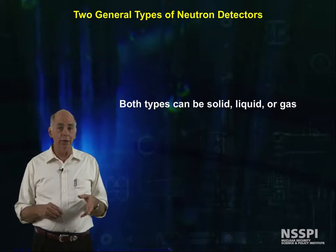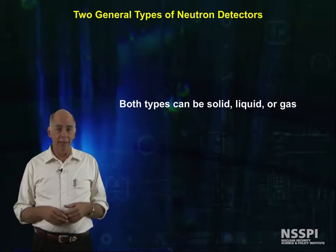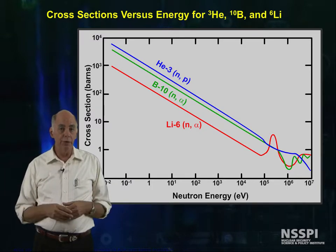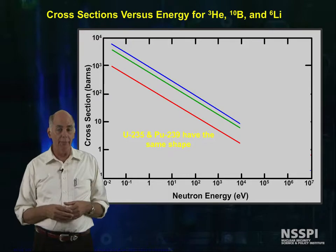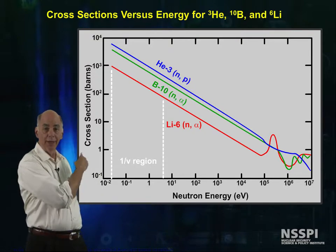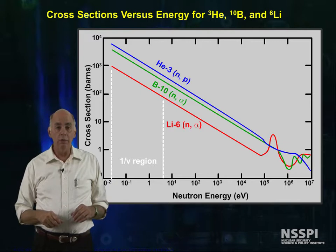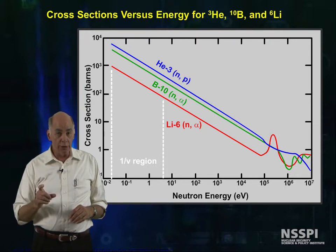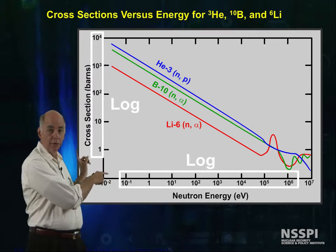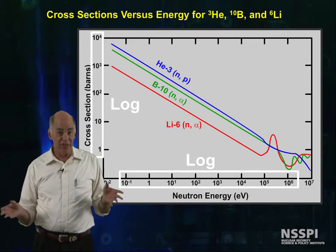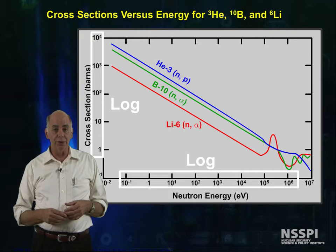Let's look a bit closer at what you buy or lose for each type of detector. Here's a graph of the cross sections for helium-3, boron-10, and lithium-6. Uranium-235 and plutonium-239 have the same shape for low energy neutrons. This region, below a few eV, where the cross sections are straight lines on a log-log graph, is called the 1/v cross section region, because the cross sections are proportional to the inverse of the neutron velocity. Notice that both axes are log scales, so that we can gain factors of tens to hundreds to thousands in probability of interaction if we slow down or moderate the neutrons before they enter the detector.